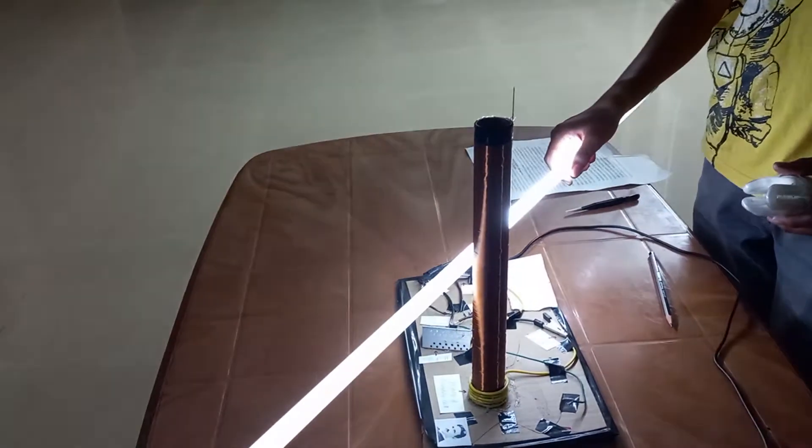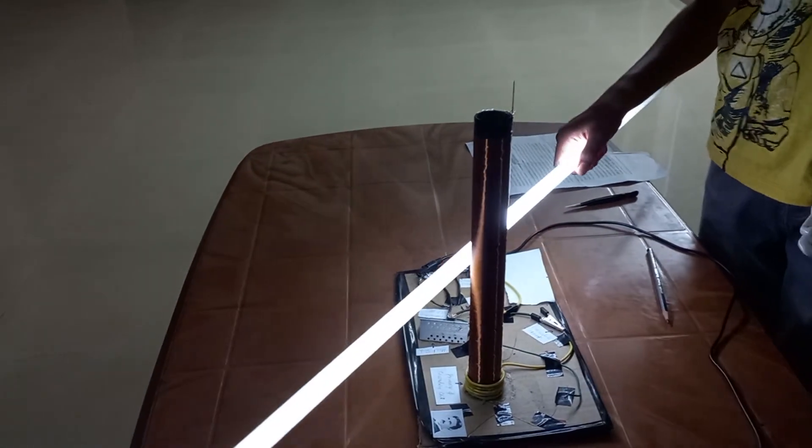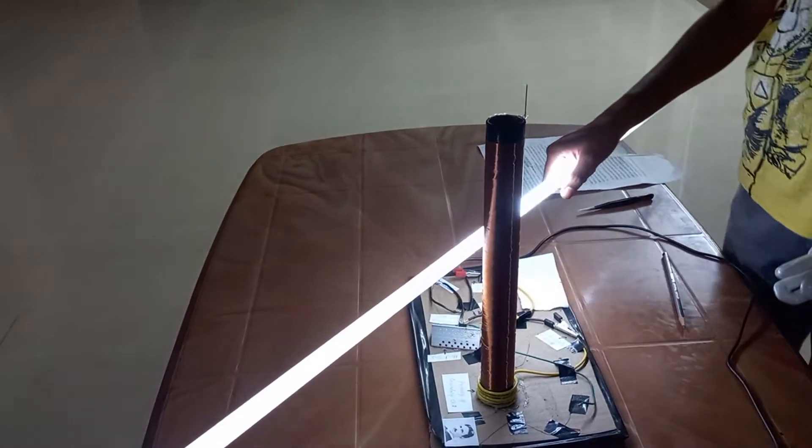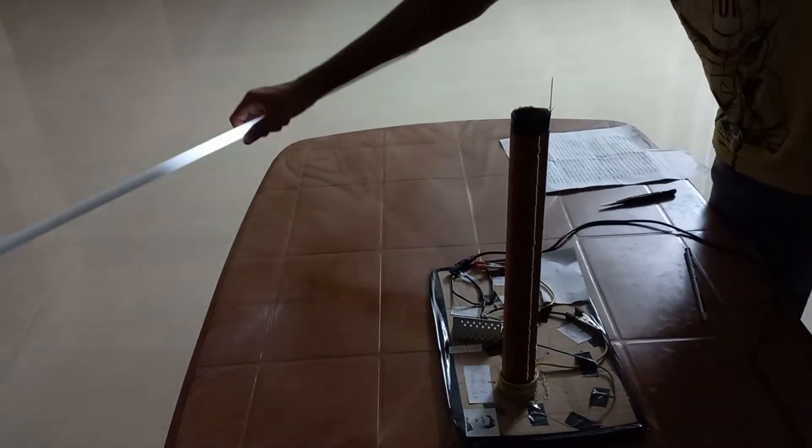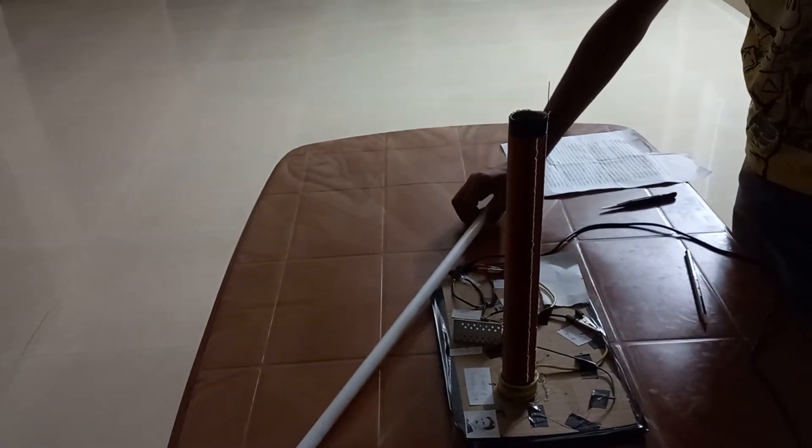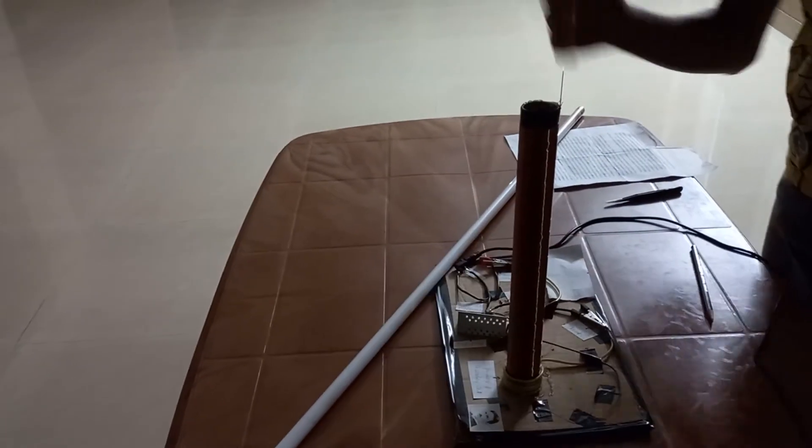It works with the tube light which is available in a home. You can see it works very well with the tube light. As I move far from it, it stops to glow because there is the electromagnetic field near the coil which makes the bulb glow.